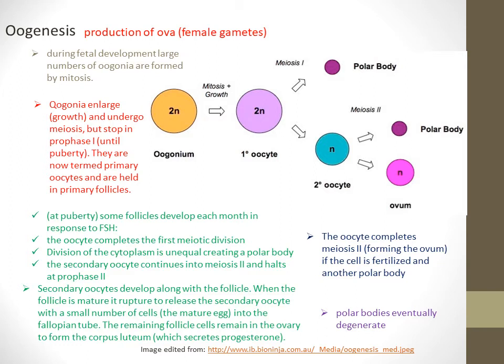Progesterone is responsible for maintaining pregnancy until birth. When the process of birth initiates, the first step that occurs is a decrease in the amount of progesterone in the bloodstream and an increase in the amount of another hormone called estrogen. There is a unique relationship between progesterone and estrogen: a surge of estrogen is one factor initiating birth when gestation completes. The oocyte completes meiosis 2, forming an ovum. If the cell is fertilized, another polar body forms. These polar bodies eventually degenerate after the end of the cycle.